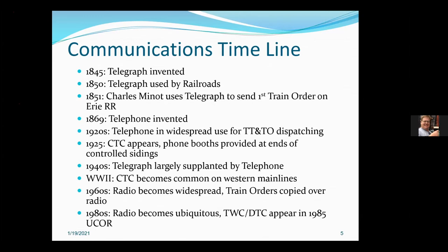In the mid-20s, CTC appears, but we still need to talk to crews — or rather, we now have the opportunity to talk to crews on the road, because we no longer have agent operators at every station. One of the cost justifications of CTC was firing a lot of people. Being fired, they're not around to hand up instructions to crews, so we put phone booths at the end of controlled sidings. By the end of World War II, CTC is very common on Western mainlines. In the 60s, radio comes in, and by the 80s, radio has pretty much taken over. The period of interest for telephone communication is roughly World War I through 1985.